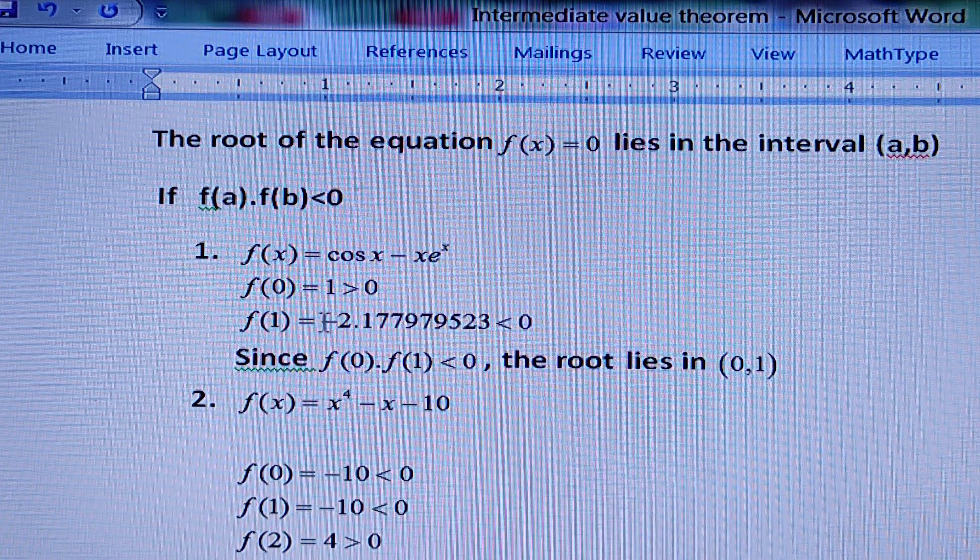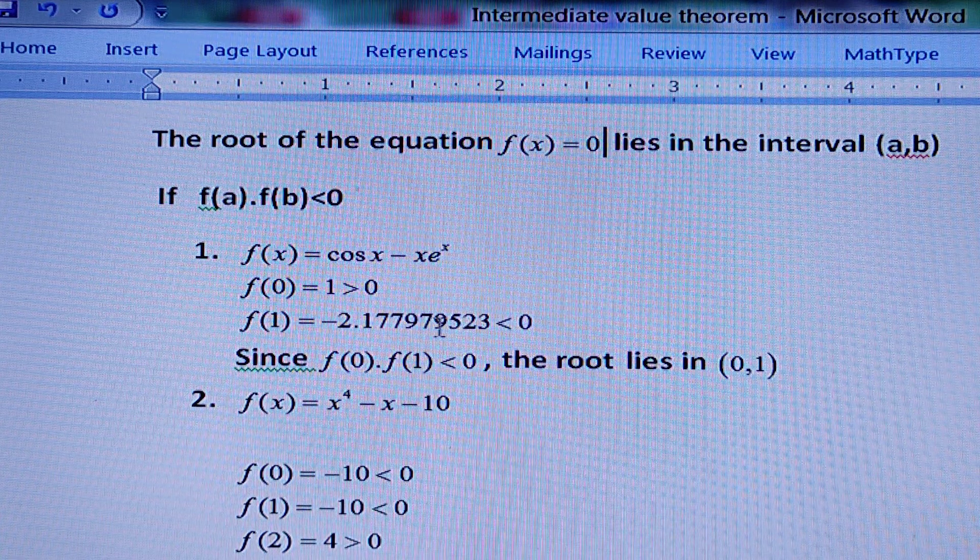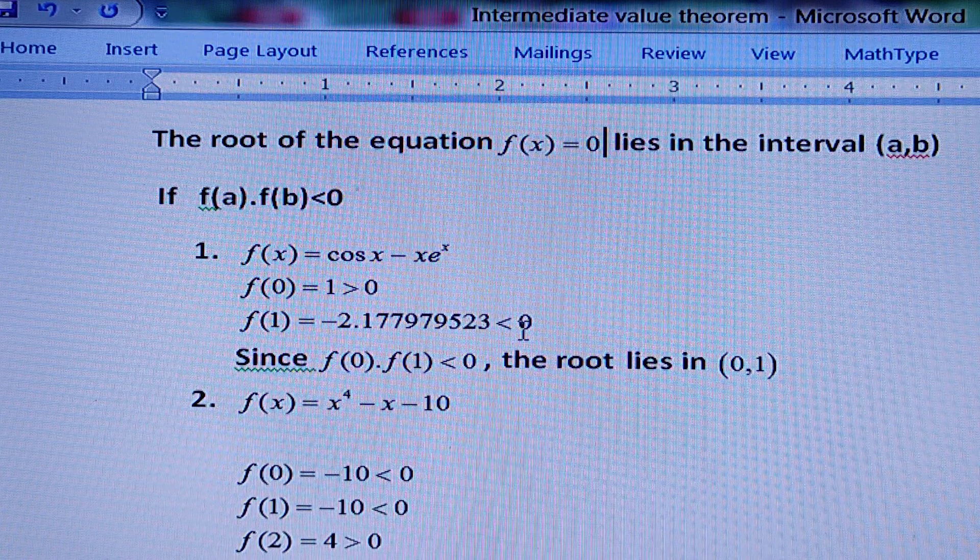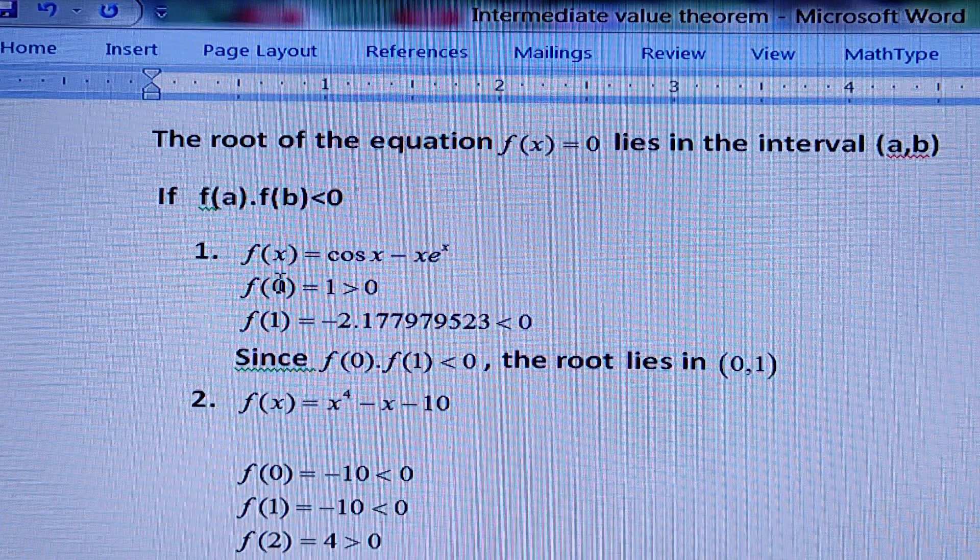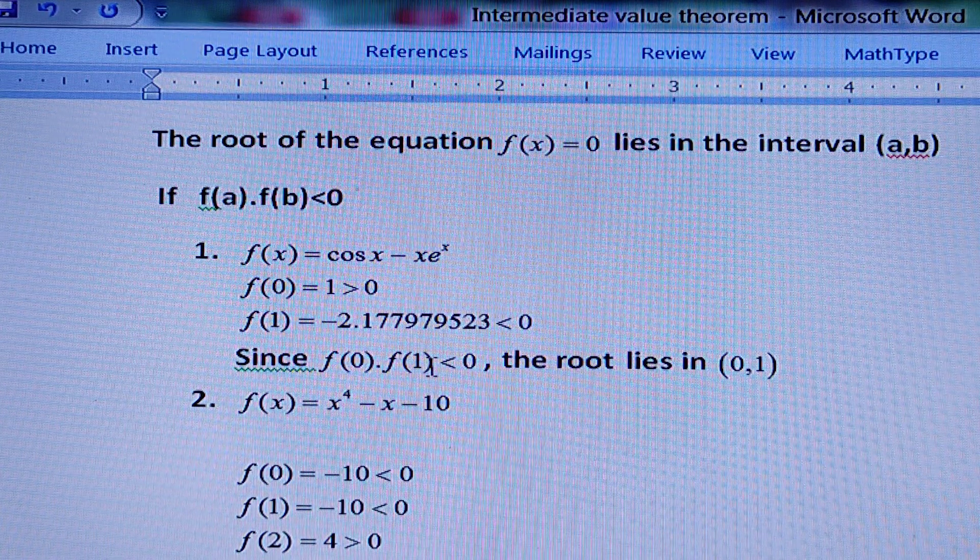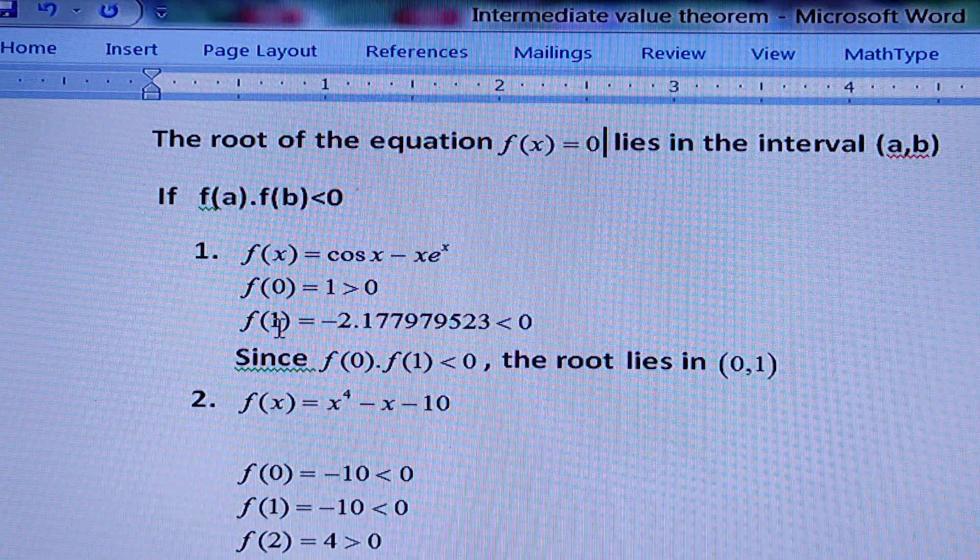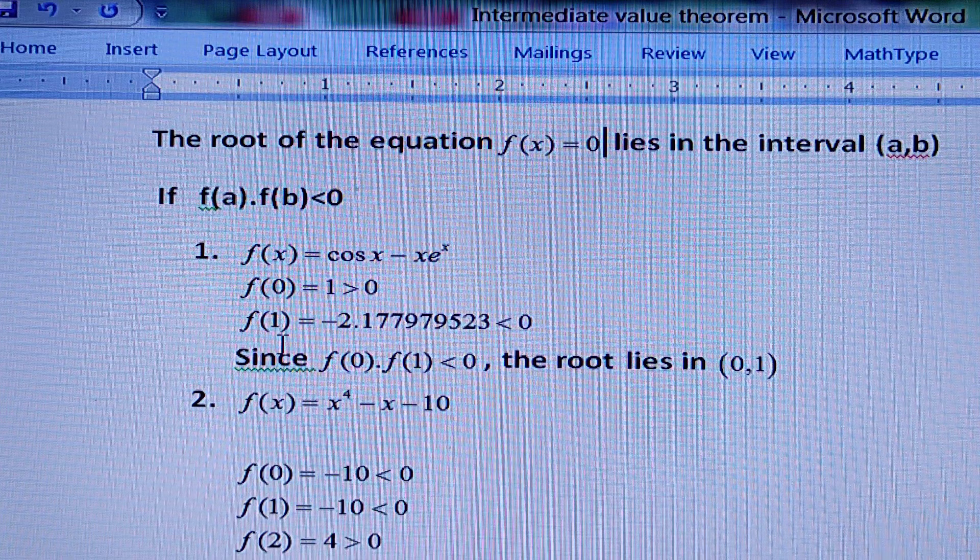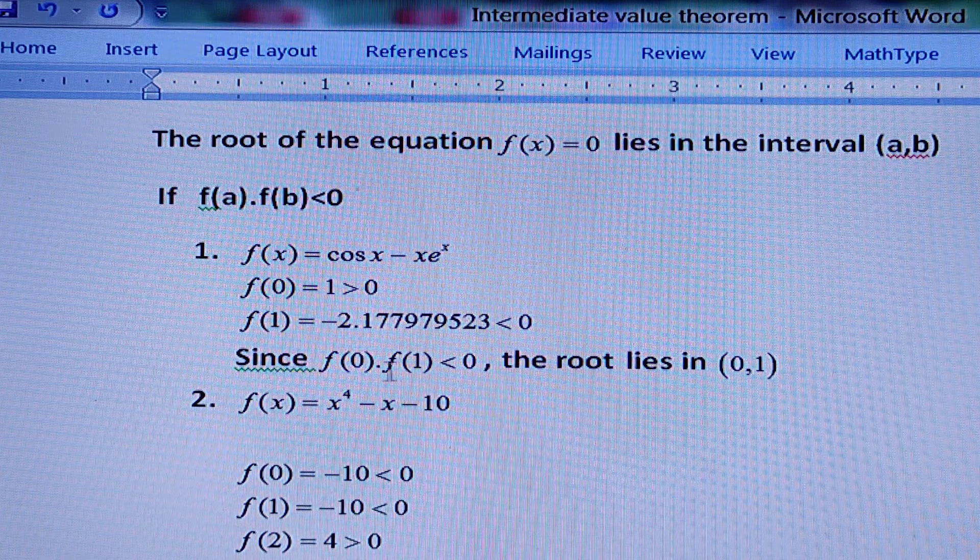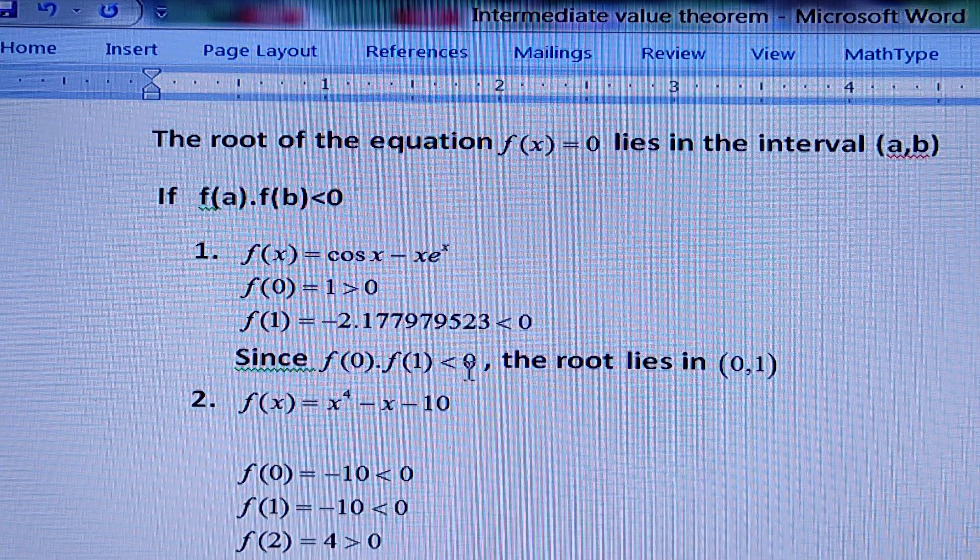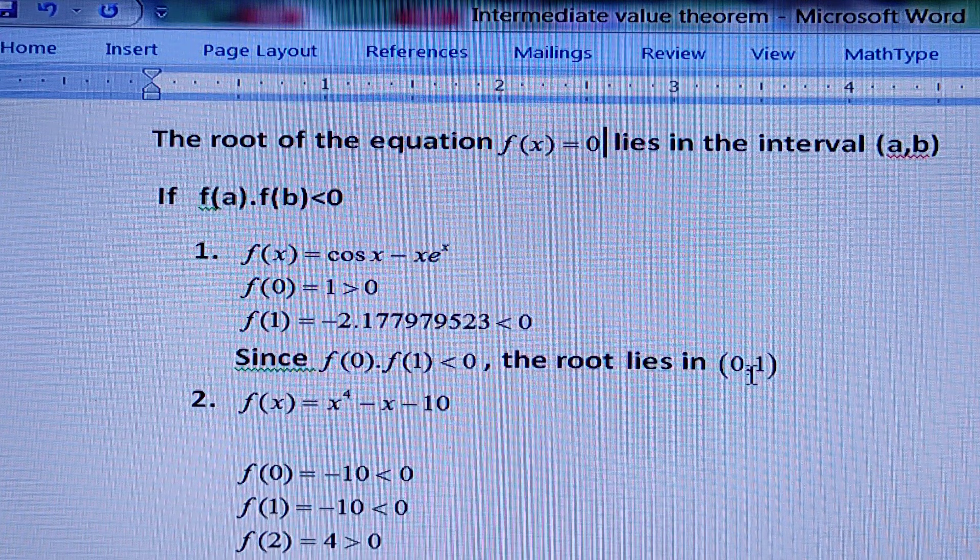And if we put x = 1, the answer will be -2.177979523, which is less than 0. So that means f(0)·f(1) < 0. One should be positive, one should be negative. And for better results, you should take consecutive terms. Since f(0)·f(1) < 0, the root lies in (0,1).